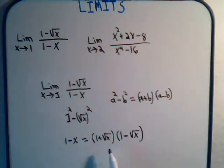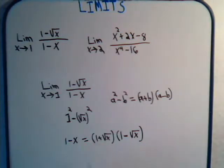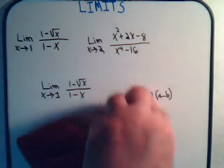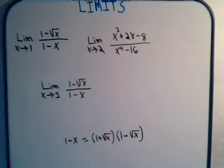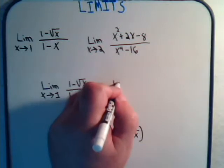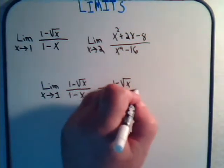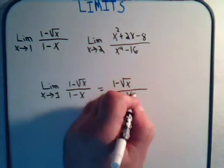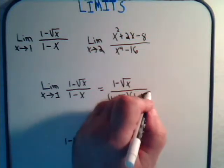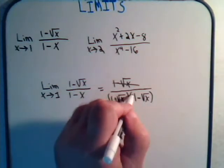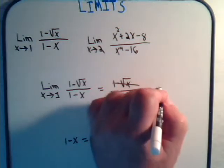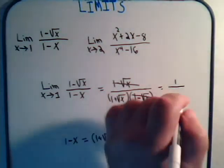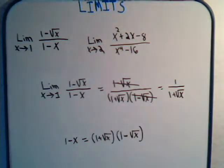Let's check that. Multiplying it out gives us 1; the inner terms cancel out, and we have minus the square root of x times the square root of x, which is just minus x — so that checks out. Going back to our problem, we rewrite the denominator so the expression becomes 1 minus the square root of x divided by 1 plus the square root of x times 1 minus the square root of x. The 1 minus the square root of x factors cancel, leaving 1 divided by 1 plus the square root of x.